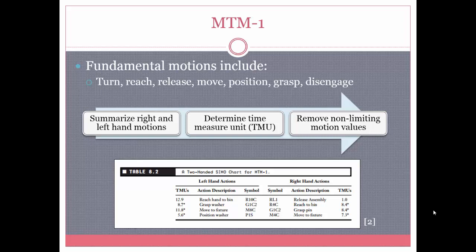Here's an example straight from our textbook showing left hand and right hand actions. For instance, reaching to bend and releasing an assembly were done by different hands, each given a specific symbol dealing with release or reach. Each symbol corresponds to a specific TMU value. You then determine whether the two actions can be done simultaneously — if they cannot, an asterisk is placed by the name. To determine the total TMU, you add up TMUs with an asterisk to the TMUs of simultaneous actions. For instance, reaching to bend with the left hand can be done simultaneously with releasing the assembly with the right hand, so 12.9 is used since it's larger. Adding all these up gives 63.1 for the total TMU.